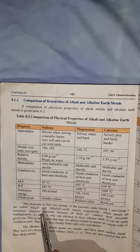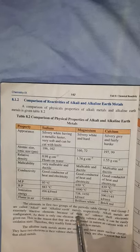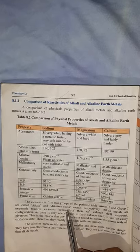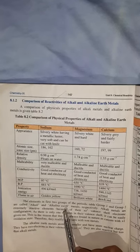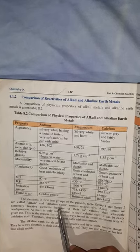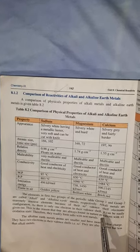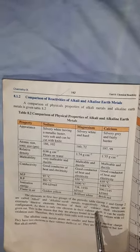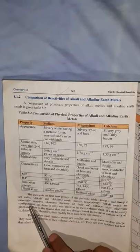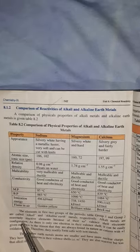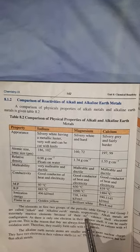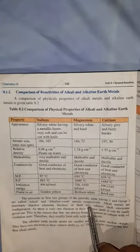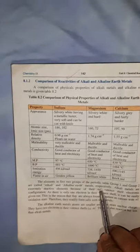Group 1a (alkali metals) and group 2a (alkaline earth metals) are the first two groups of the periodic table. Alkali metals are extremely reactive because of their ns¹ valence shell electronic configuration — they contain one electron in the outer shell — while group 2a elements contain two electrons in the outer shell.